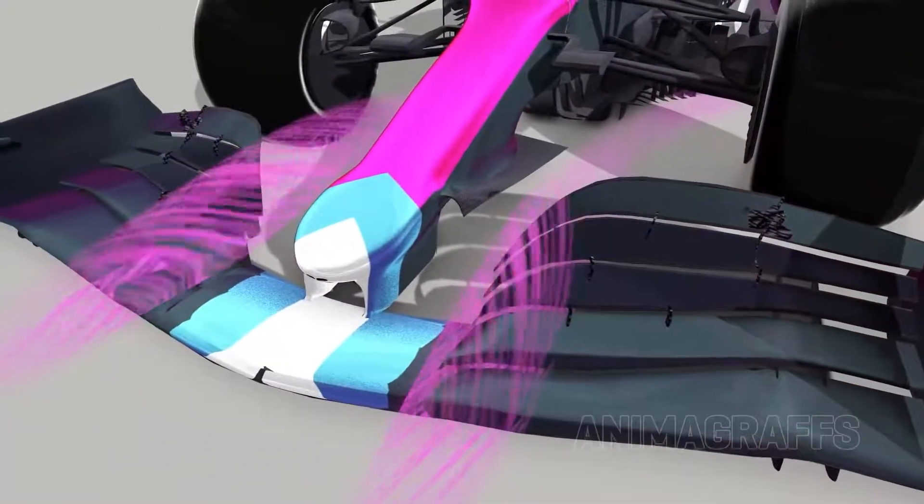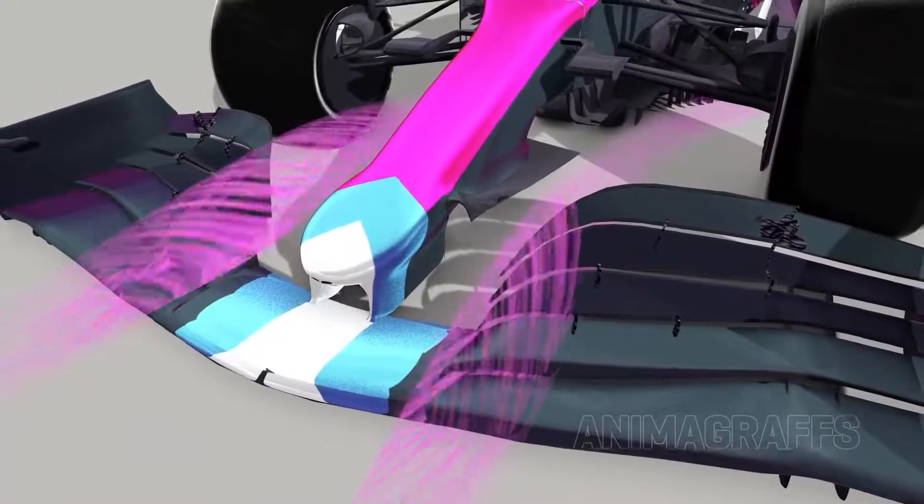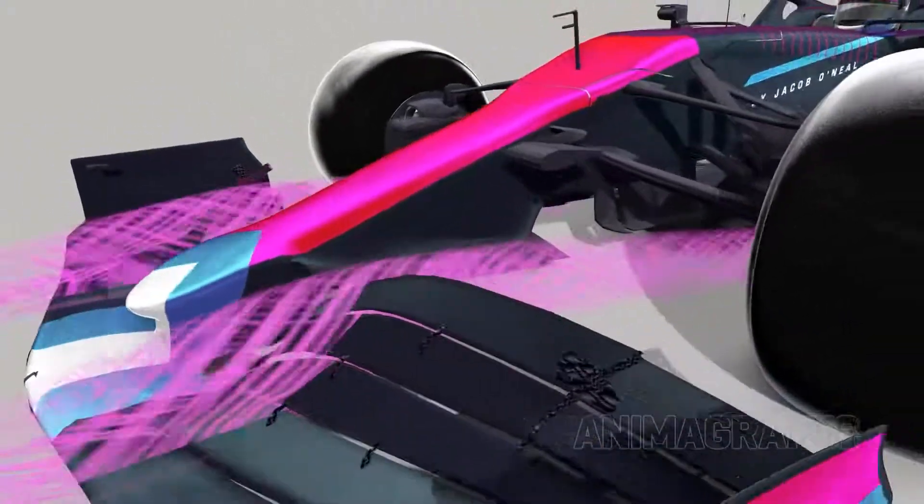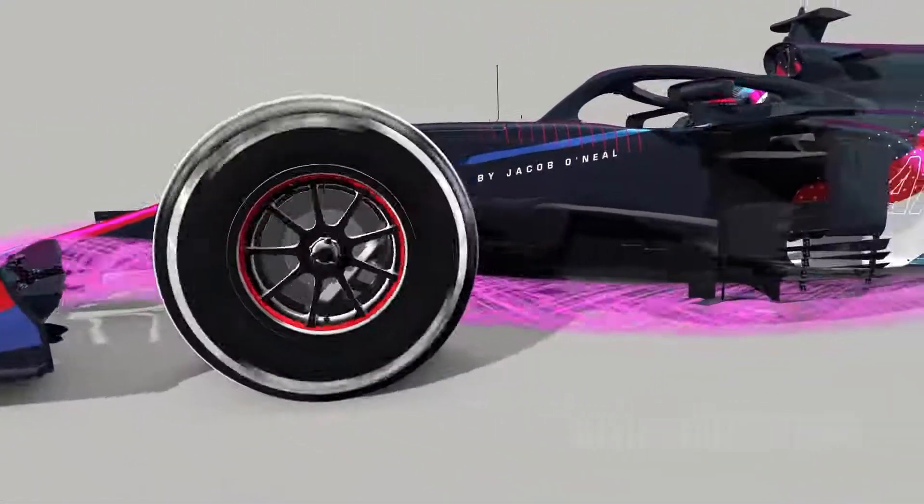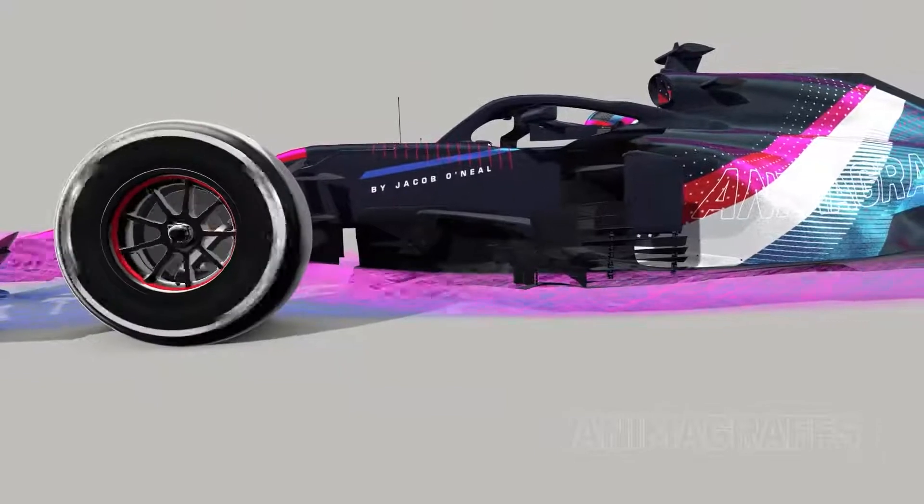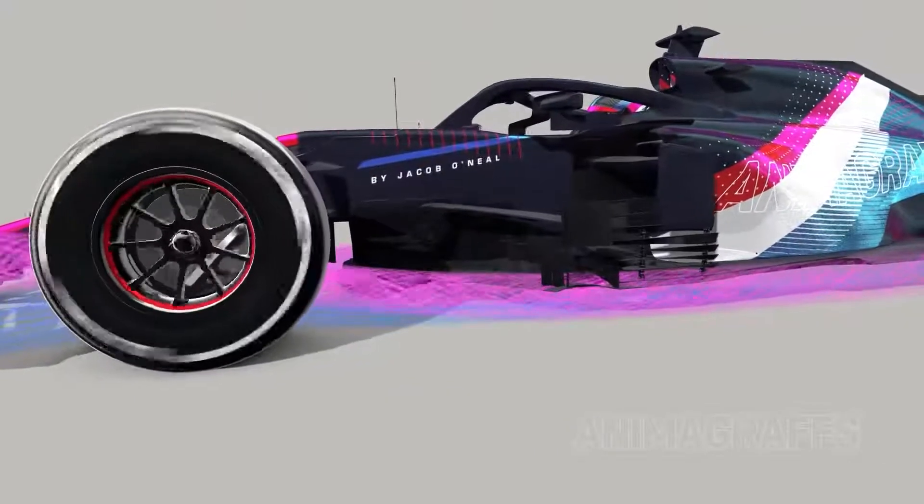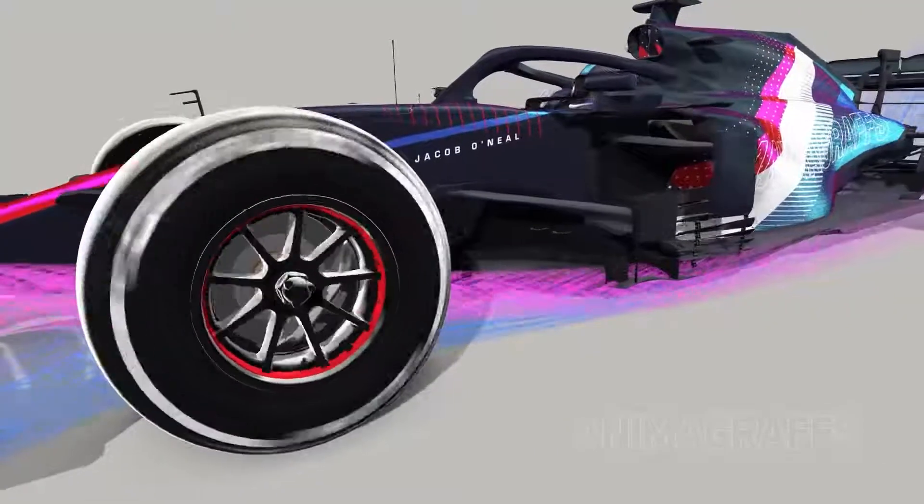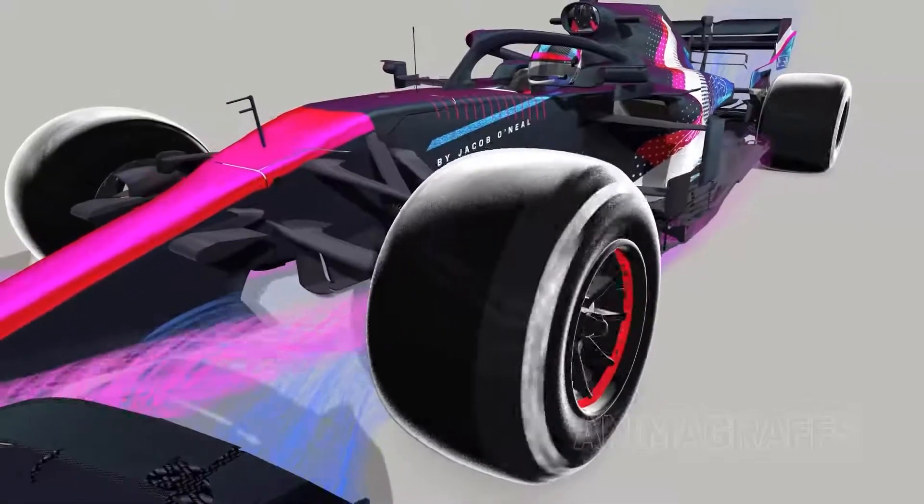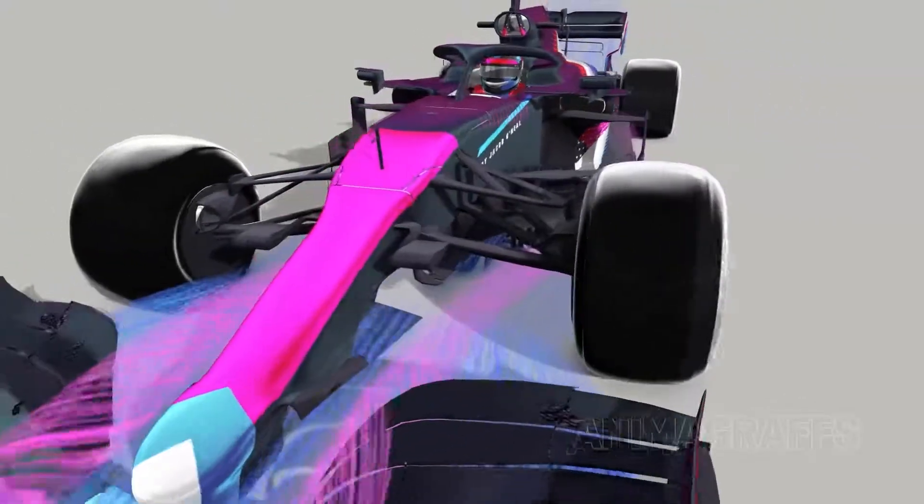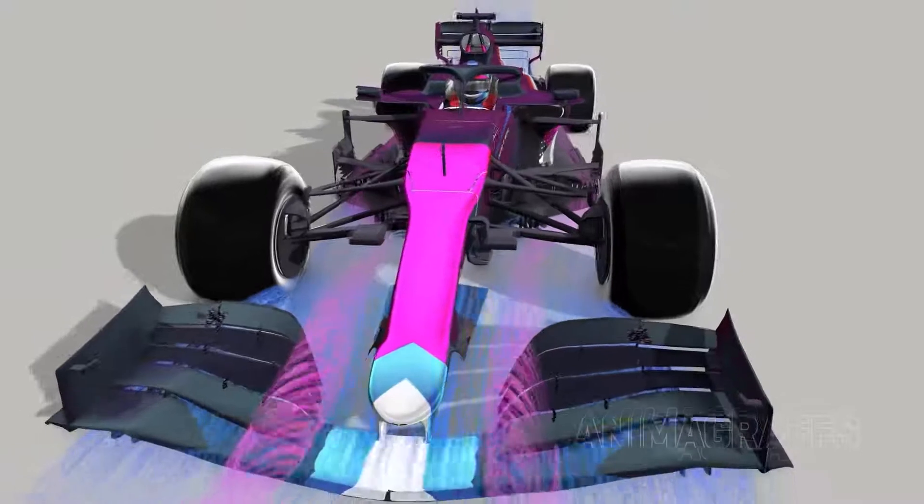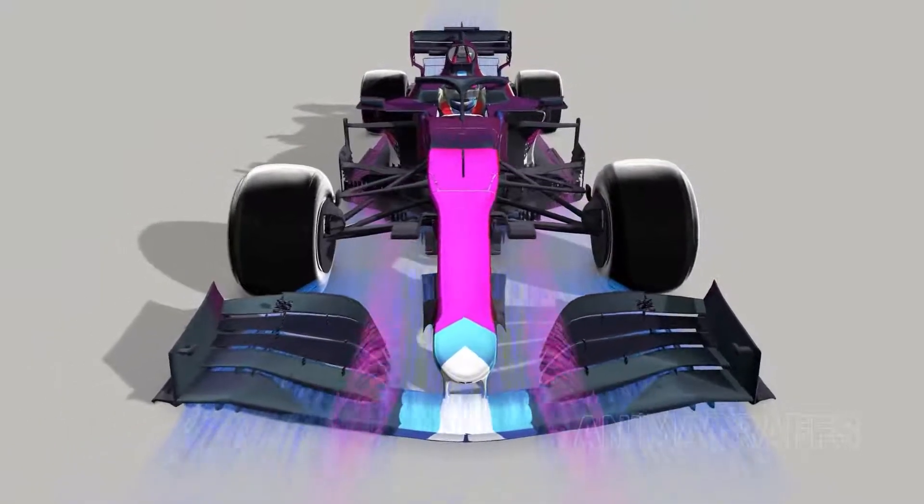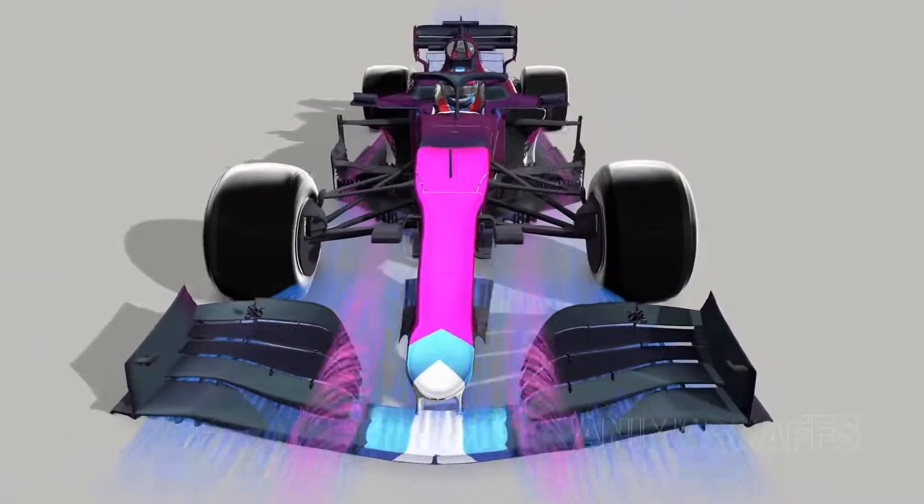In contrast, the pointed, curved-in surfaces on the inside edge of the wing intentionally shape and direct a vortex around the floor of the car, sealing in the clean air that passes beneath. So, while vortices do cause drag, they're also a useful tool to separate and seal in different areas of airflow.